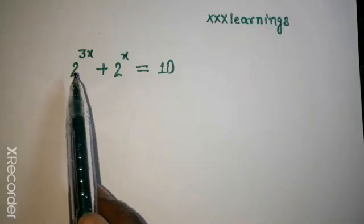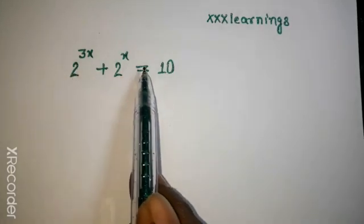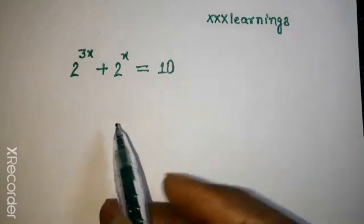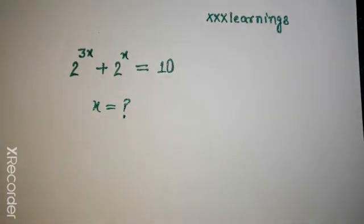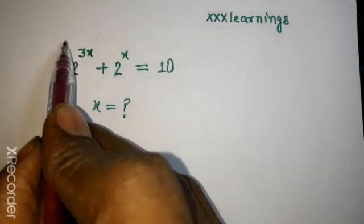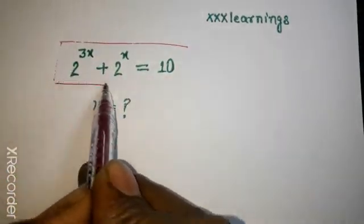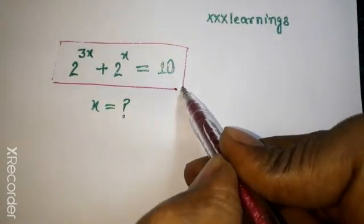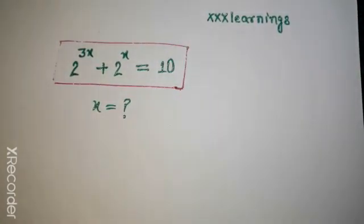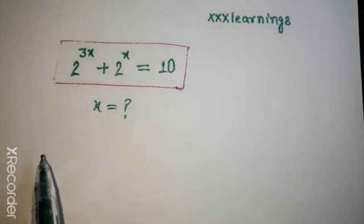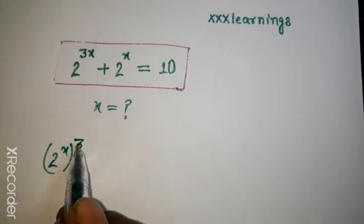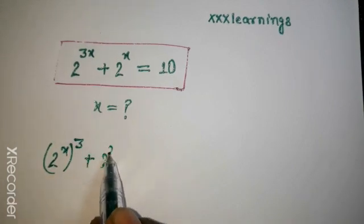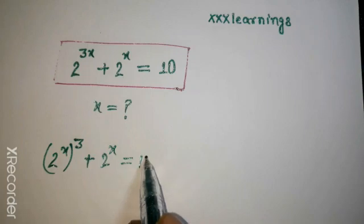2 to the power 3x plus 2x equal to 10 — we need to find the value of x. This is our equation. We can write this equation as 2x to the power 3 plus 2x, that is 10.